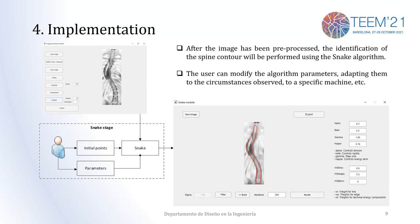That image is then given to the snake, and the snake takes into account the initial points given by the user and the parameters. As seen in the image on the right, we can define the value of alpha, beta, gamma, and kappa, as well as the weight of the line, h, j, and other terms, which can modify the behavior of the snake algorithm — that is, the information related to the internal and external forces we have been discussing.